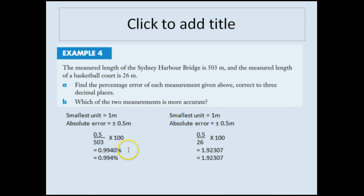Okay, so I've worked through both of these questions now. So the smallest unit for the Sydney Harbour Bridge is one meter. That's what's stated in the question. So the absolute error is plus or minus half a meter. So using our formula from before, we put 0.5 over 503 times 100. If you plug that into your calculator, you get 0.9940%. Rounding that to three decimal places, which is what the question has asked us to do, we get 0.994%.